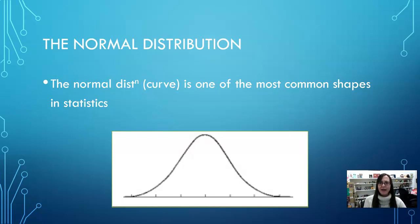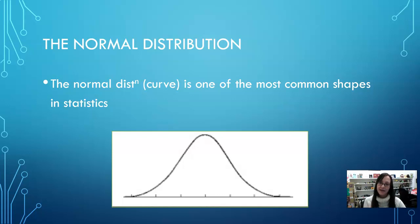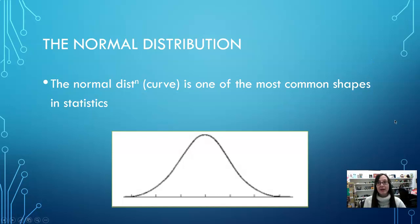When we're talking about things like sampling distributions, and any time where you're gathering enough data, at some point you're going to get the normal distribution. It just happens so naturally and so often that so many statistics are based on the assumption that you have a normal distribution in your data.